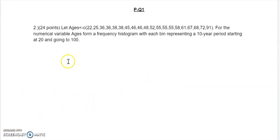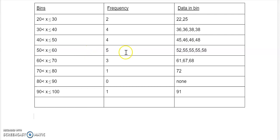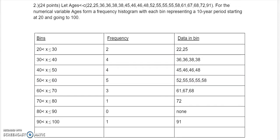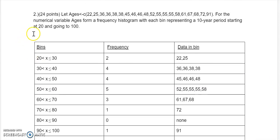So here's practice quiz 1, question 2. It's giving us this vector of values. It says for the numerical variable ages, form a frequency histogram with each bin representing a 10-year period starting at 20 and going to 100. Let me put the table here, then I'll discuss how I got it.